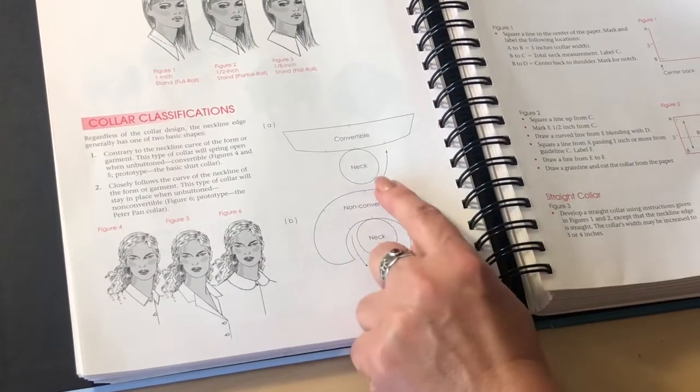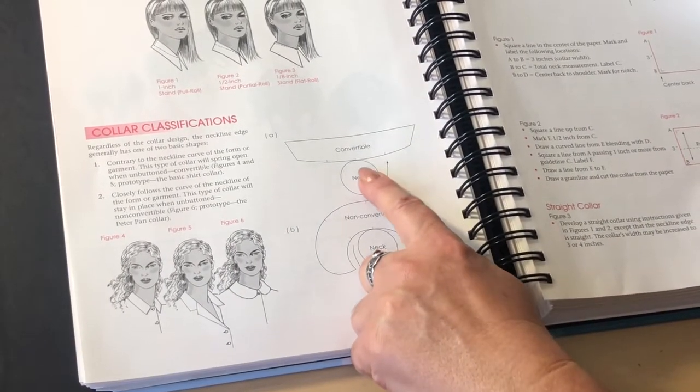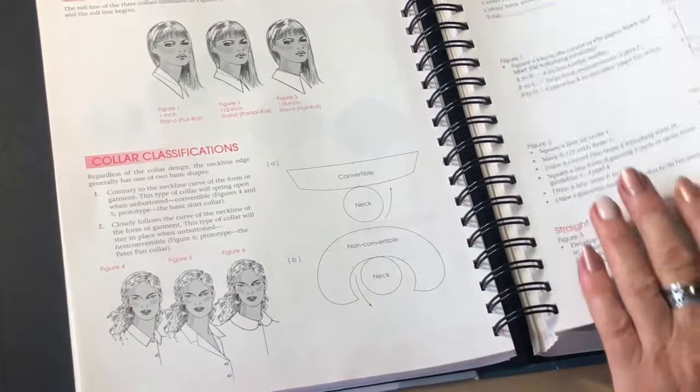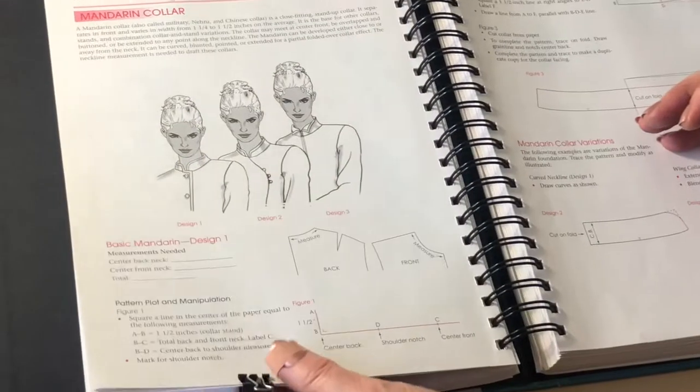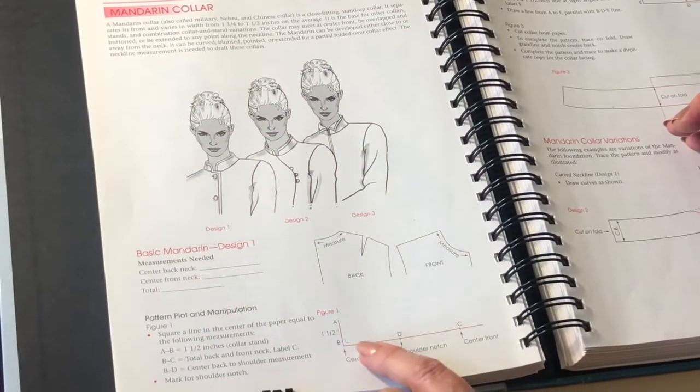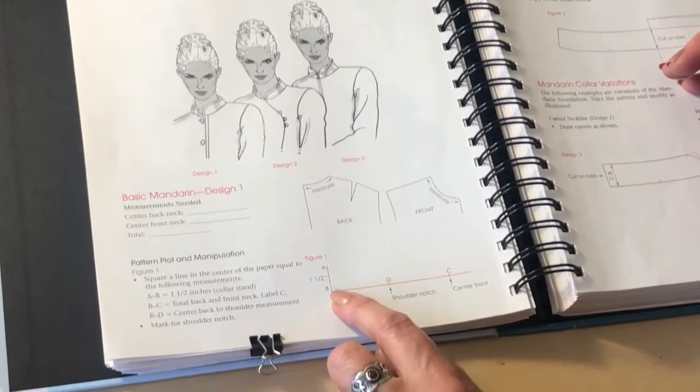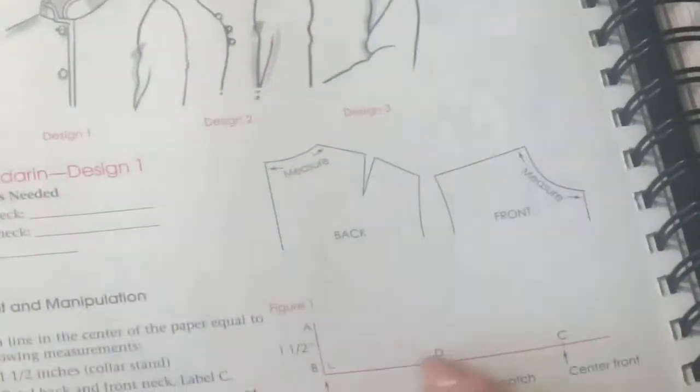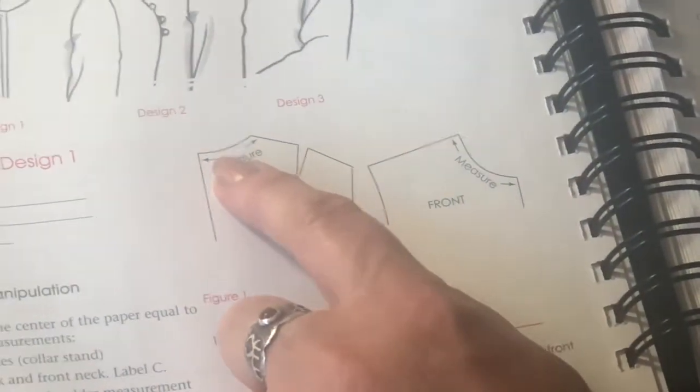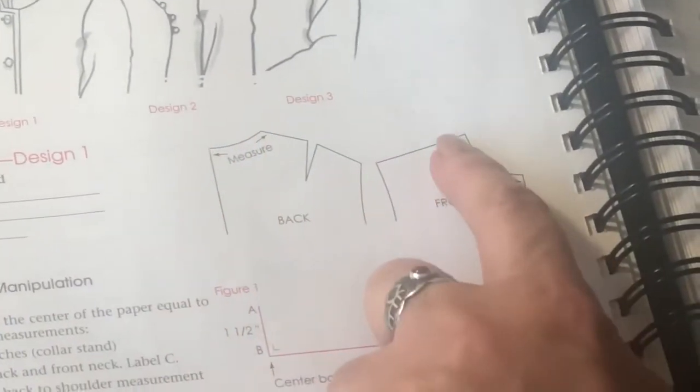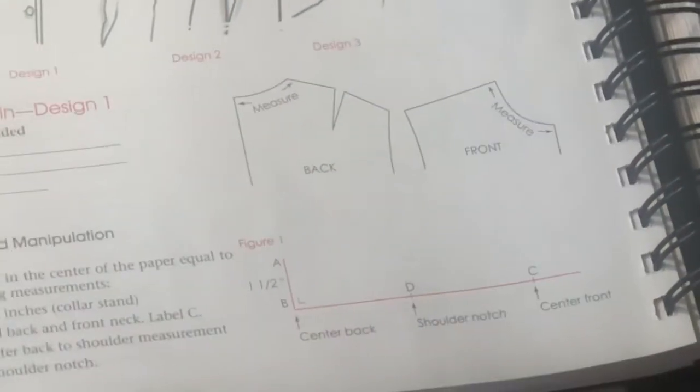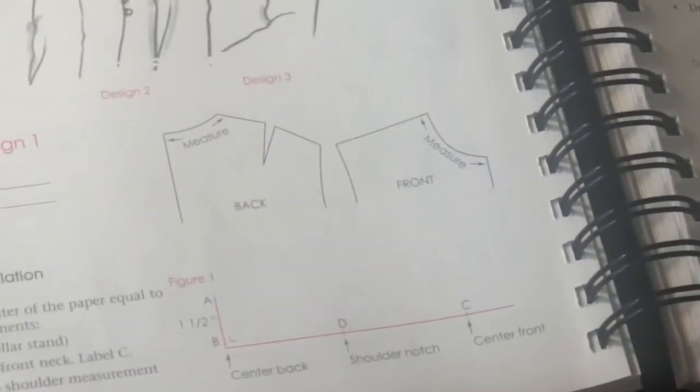So the Mandarin collar belongs to this group of collars, which is like convertible collar, and it is structured starting from the straight line, as you can see. But one thing that we all have to understand is the collar's length and measurement should be matching the back neckline plus the front neckline.